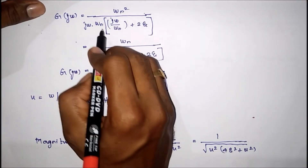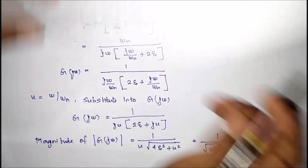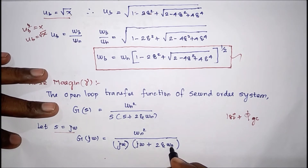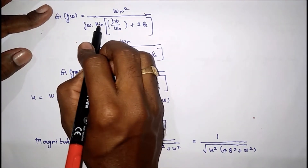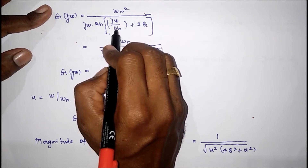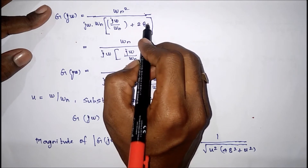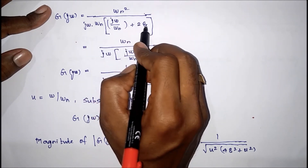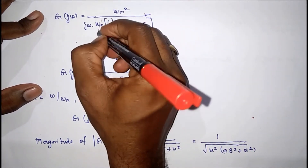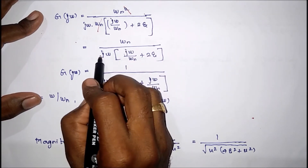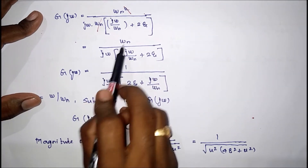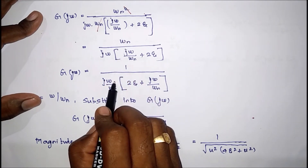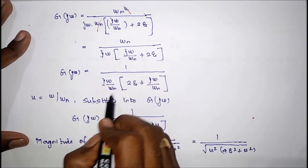Next, we take ωn outside from the equation. In the denominator, the first term gives ωn, and the second term already has ωn so it becomes 2ζ. The ωn squared cancels, giving ωn divided by jω, multiplied by (jω/ωn + 2ζ). We then bring ωn to the denominator side, writing 1/ωn.